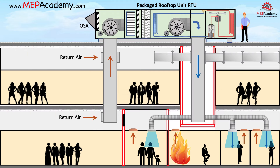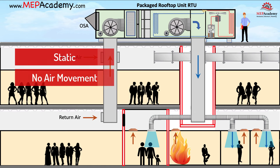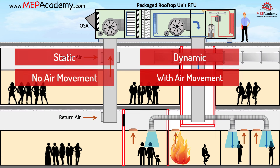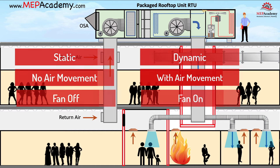Fire dampers are classified for use in a static system. A static system is an HVAC system designed to stop the movement of air within the system at the indication of a fire. A dynamic system is an HVAC system designed to maintain the movement of air within the system at the indication of a fire. In a static system the fan should be off, while in a dynamic system the fan will be running as part of an engineered smoke control system.